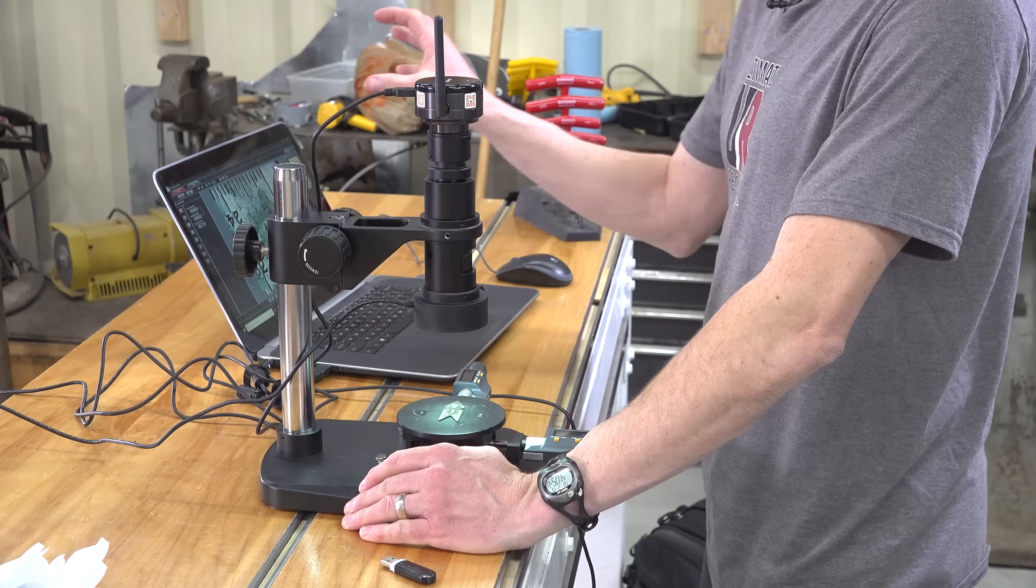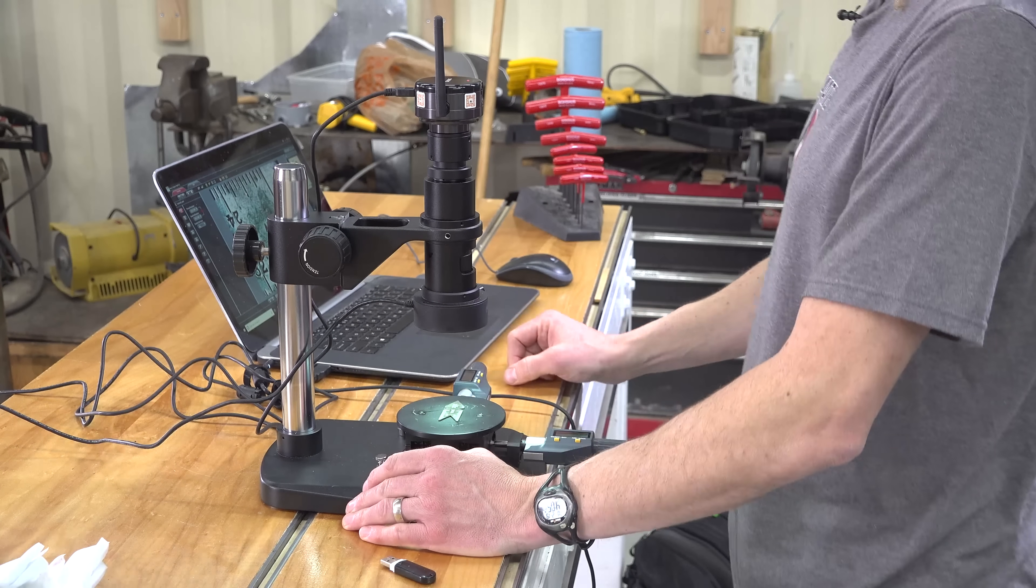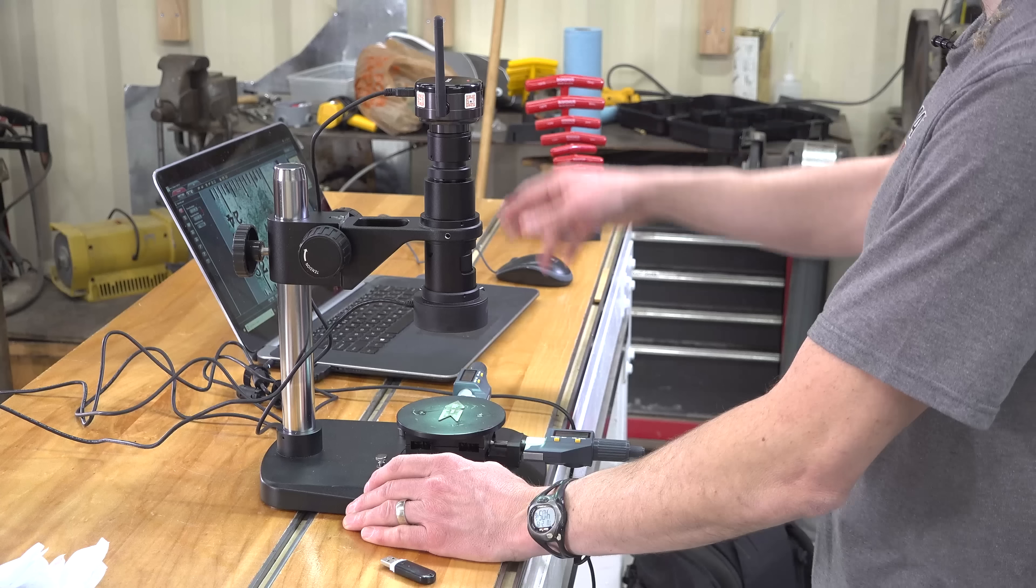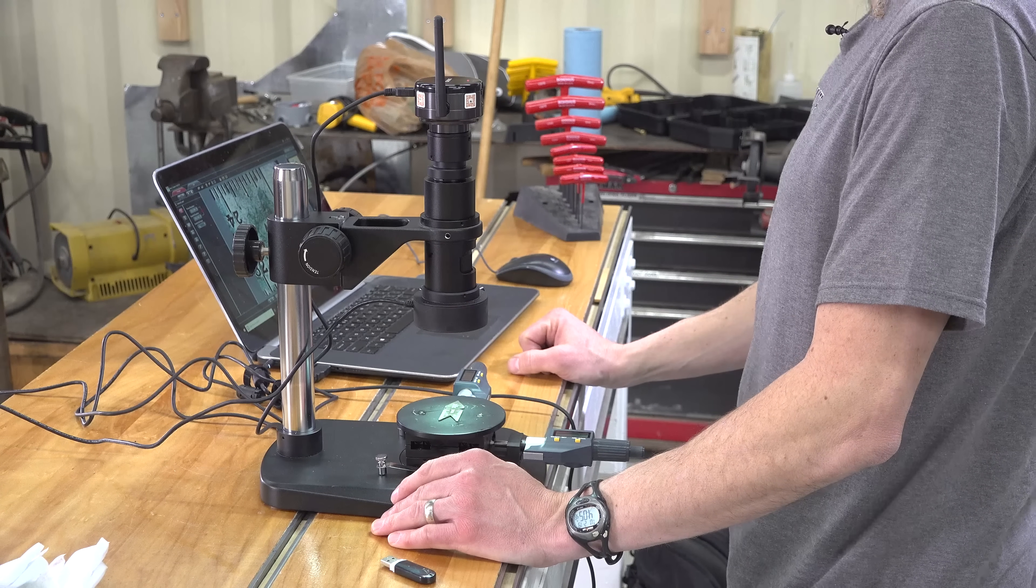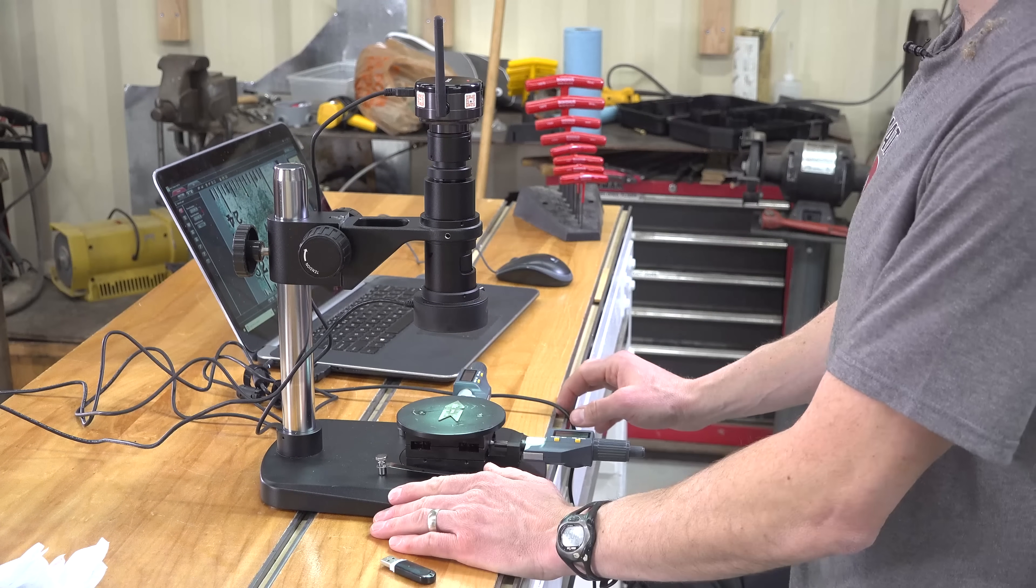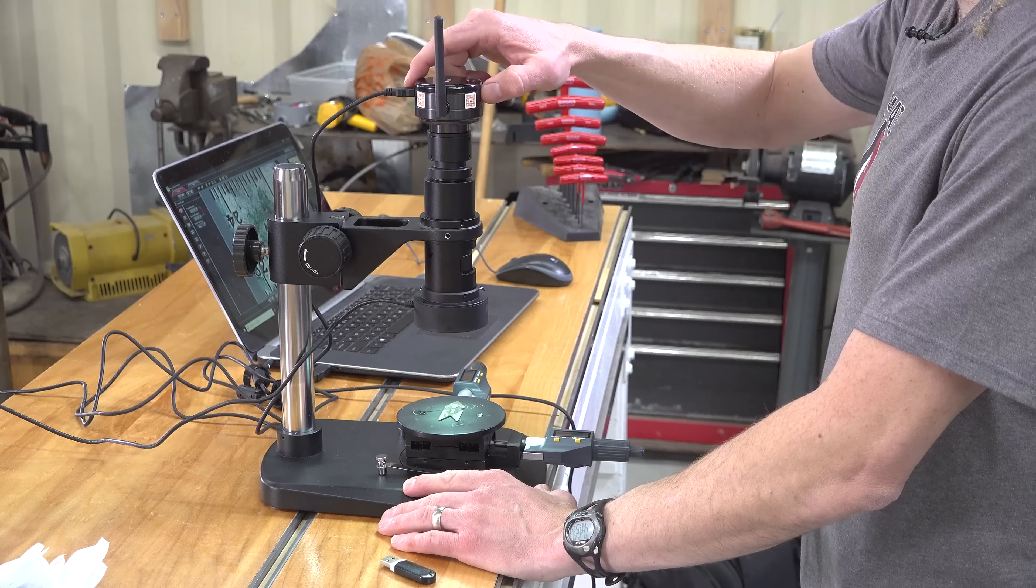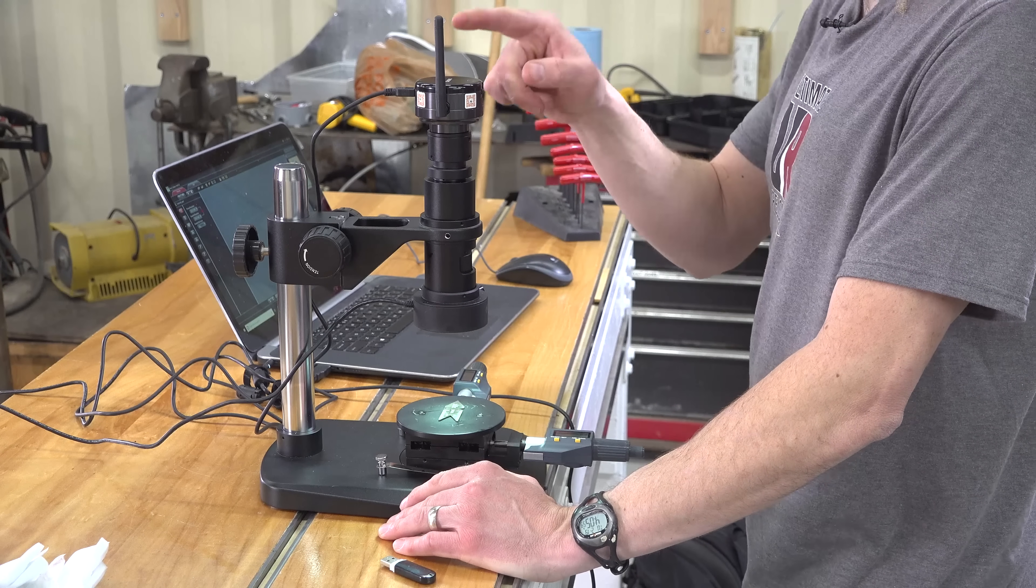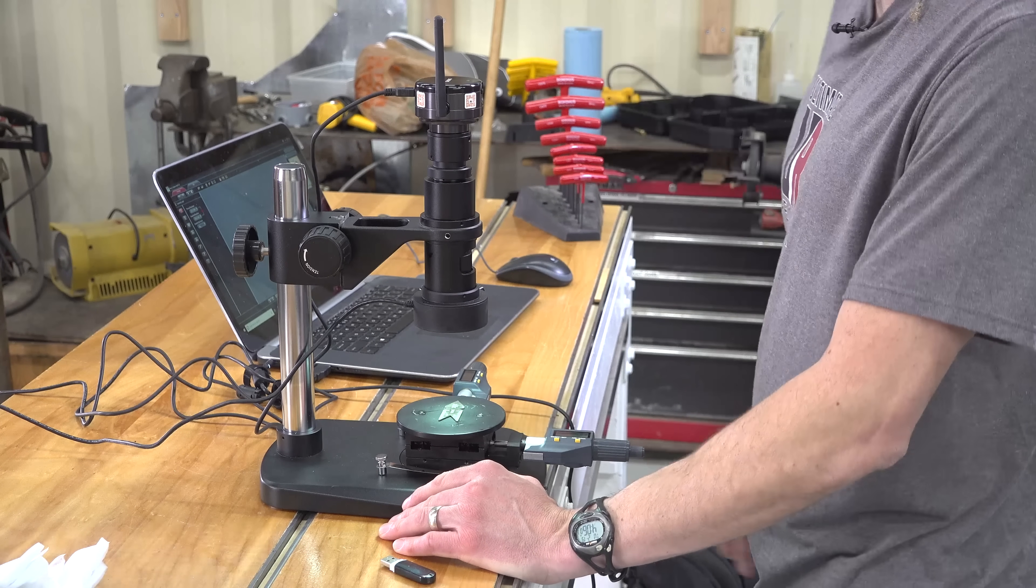We can hit the record button here and record what we're seeing on the PC. It produces an AVI file that we can import into a video editing program or view later. So this is kind of the PC connectivity scenario. And if we switch this switch here to Wi-Fi, we're going to have a Wi-Fi access point. Let me show you how this works with the phone.